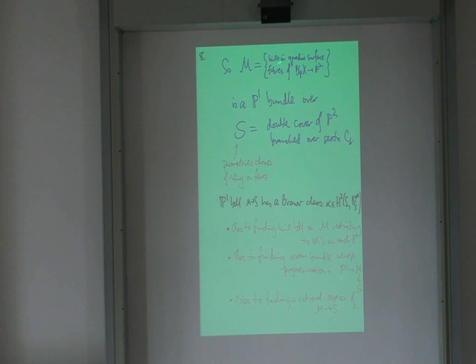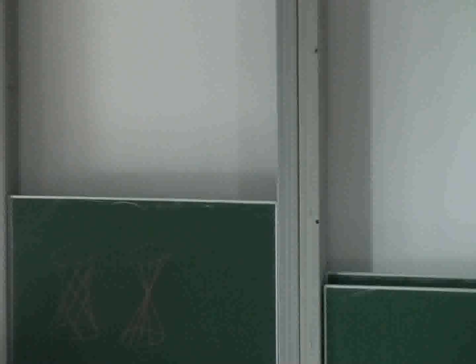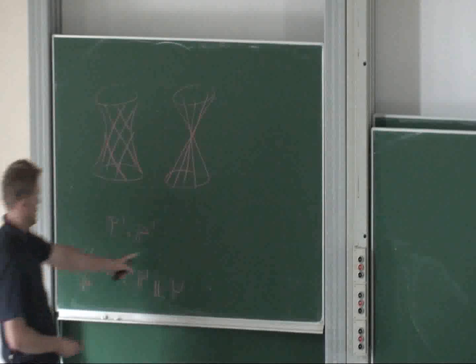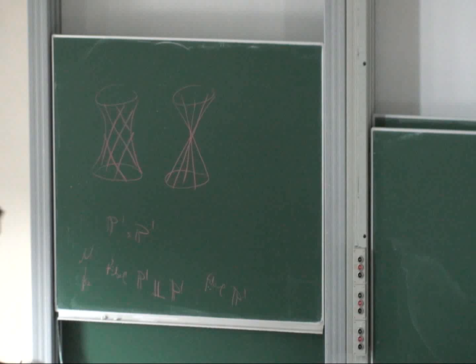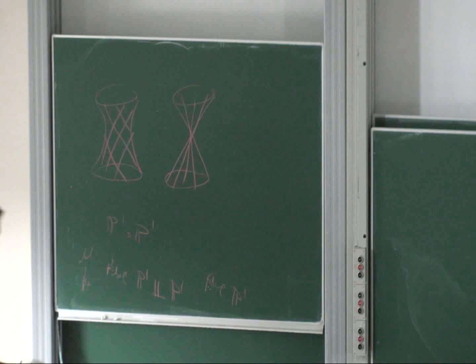Okay, so there's naturally associated to this, this moduli space. You could consider the lines in the quadric surface fibers of this fibration. So there's, you know, this is disjoint. In this case, here the moduli space works over P2. But here the fiber is just P1 disjoint union. All right, there's this P1 of the lines and this P1.